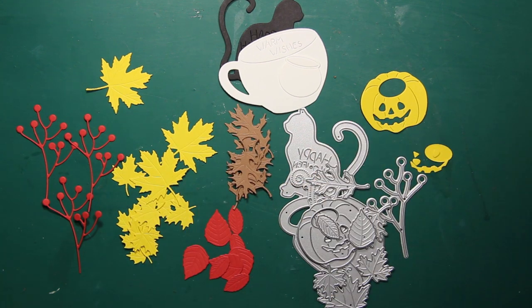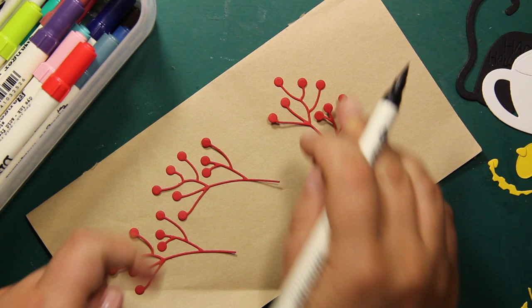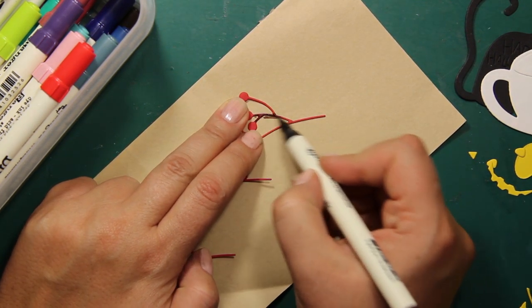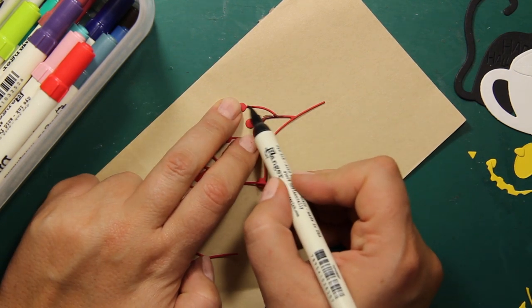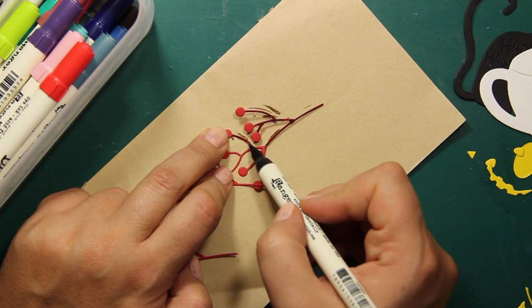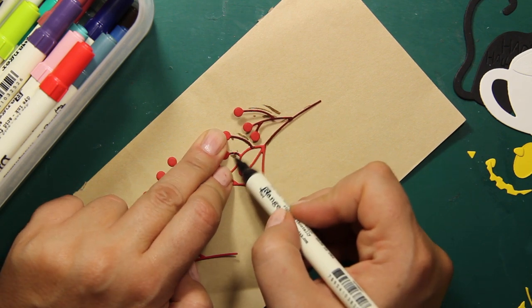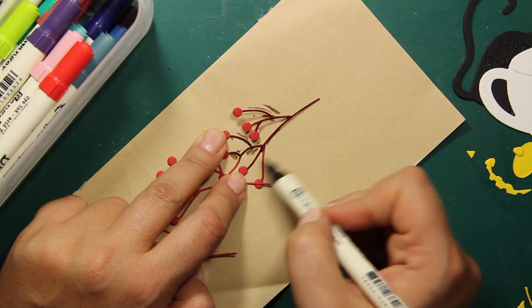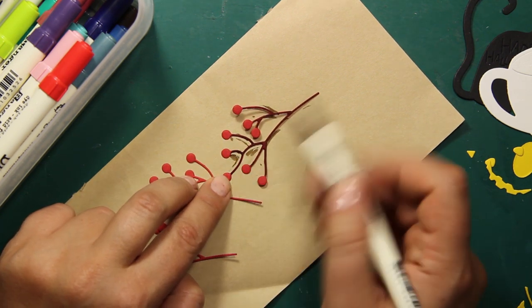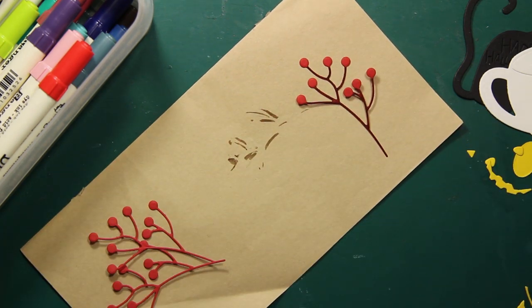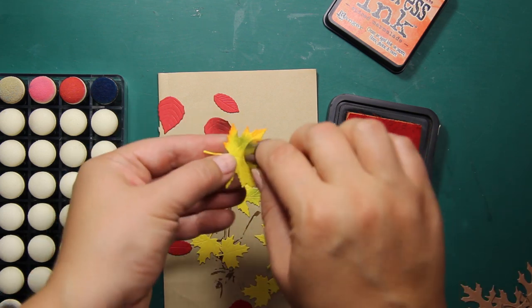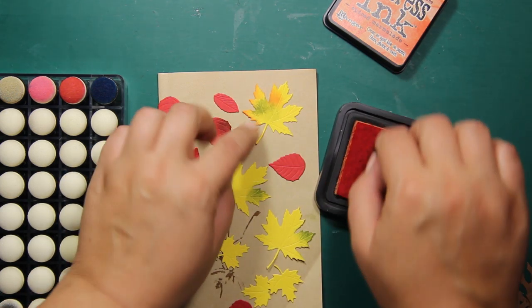Before I start attaching all the elements onto the card front, I'm gonna add some inking and coloring to the die cuts. With this berry branch, I'm going to take Gathered Twigs distress marker, which is dark brown, and I'm going to color all the branches, leaving the berries red. I'm going to color all the branches exactly the same way, and then I'm moving on to the leaves.